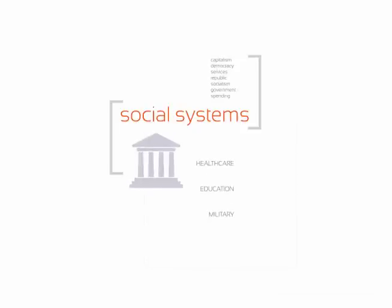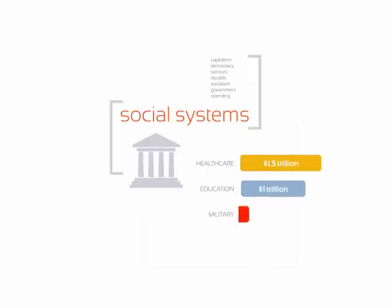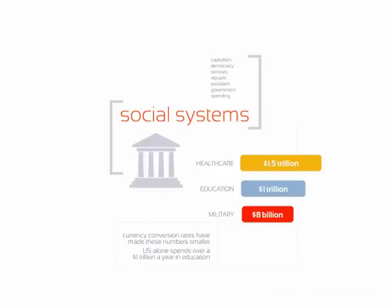Social systems: as people, we rely on our elected officials to help care for us. Governments worldwide spend over 1.5 trillion dollars in health care, 1 trillion in education, and 8 billion dollars in military defense. Note that currency conversion rates have made these numbers much smaller than they really are. The US alone spent over 1 trillion dollars a year in education.